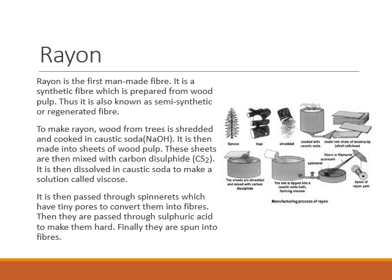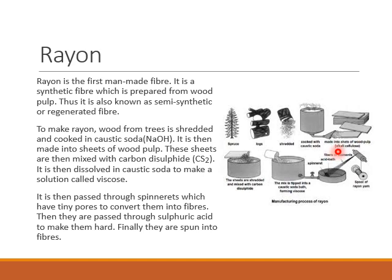Now let's see how rayon is manufactured. To make rayon fiber, the wood from trees is shredded into fine particles and cooked with caustic soda, which is sodium hydroxide. After cooking it with sodium hydroxide, it is converted into sheets of wood pulp. This is known as alkali cellulose.